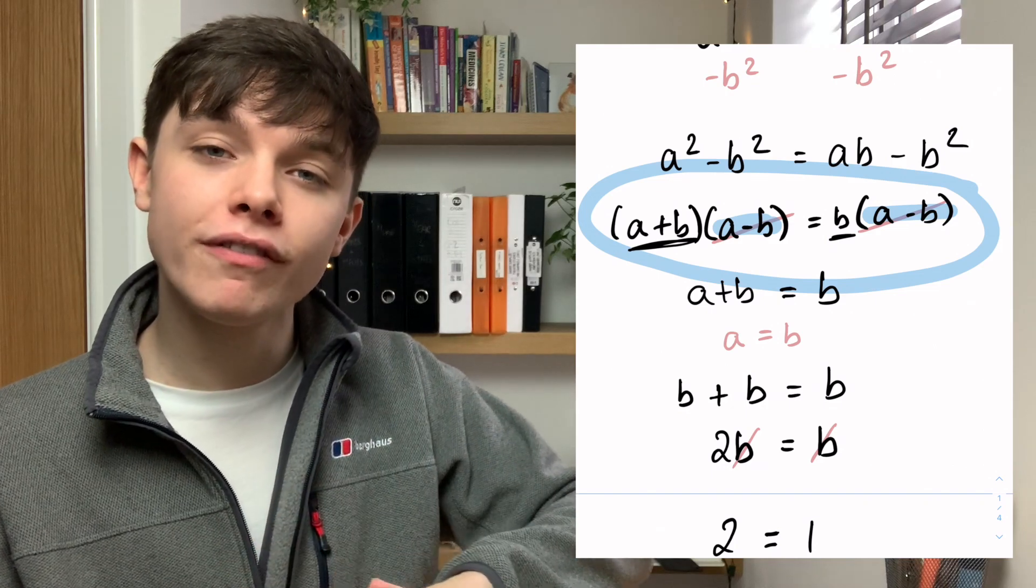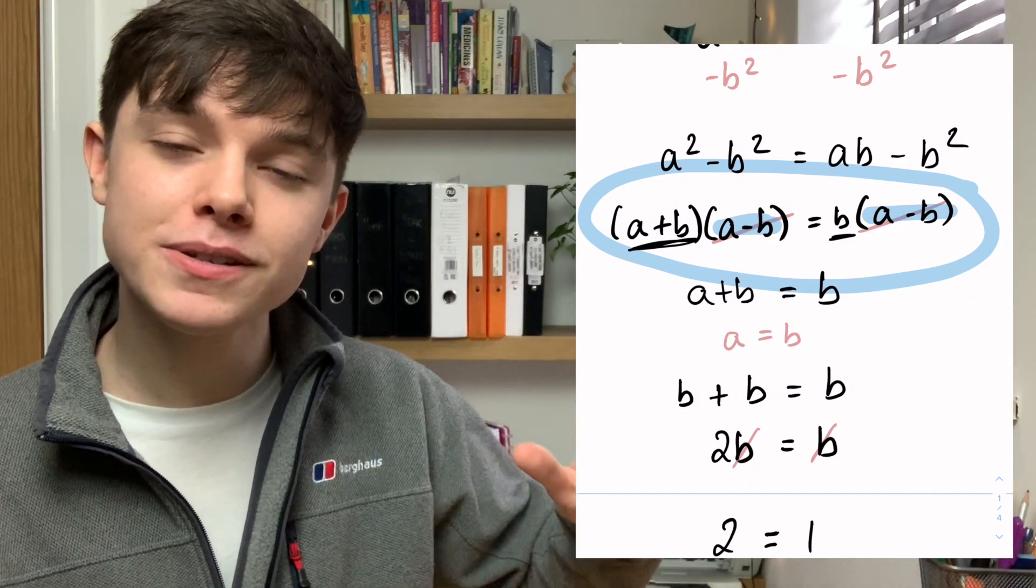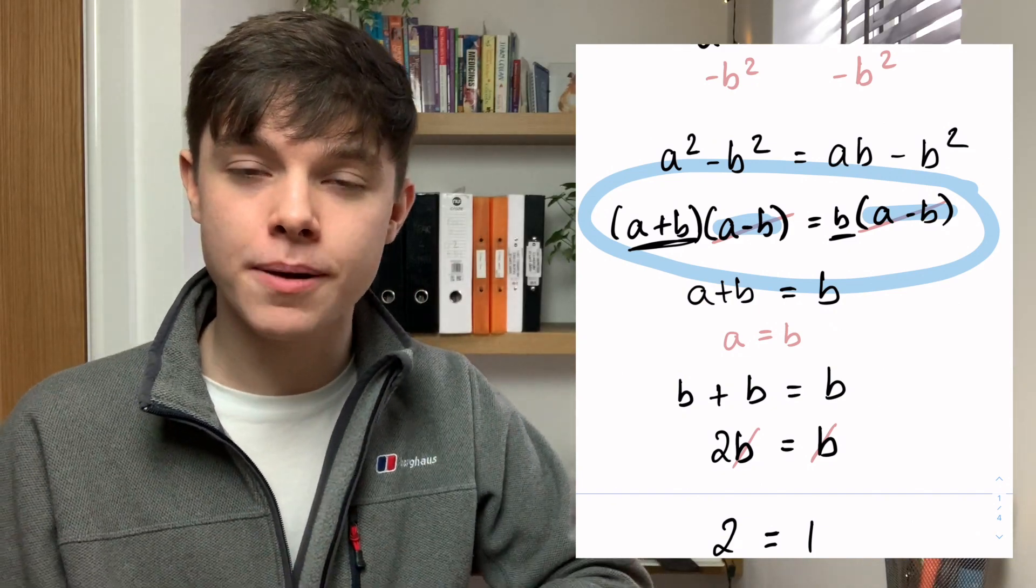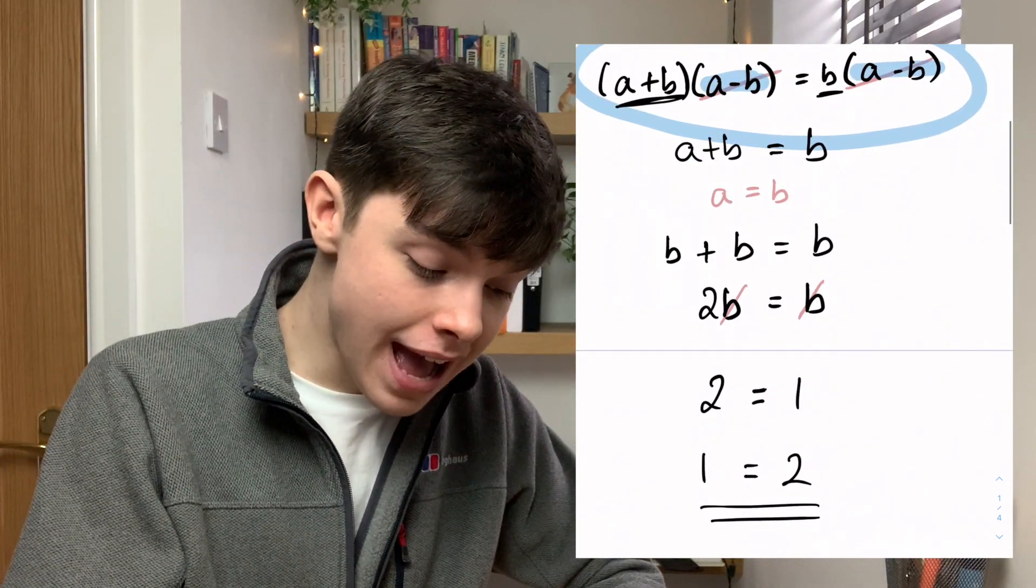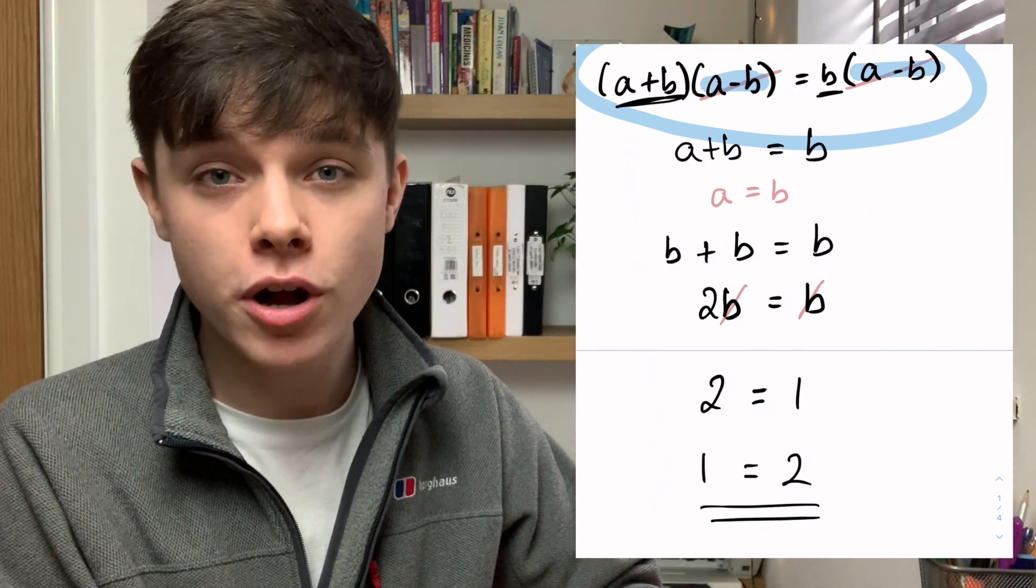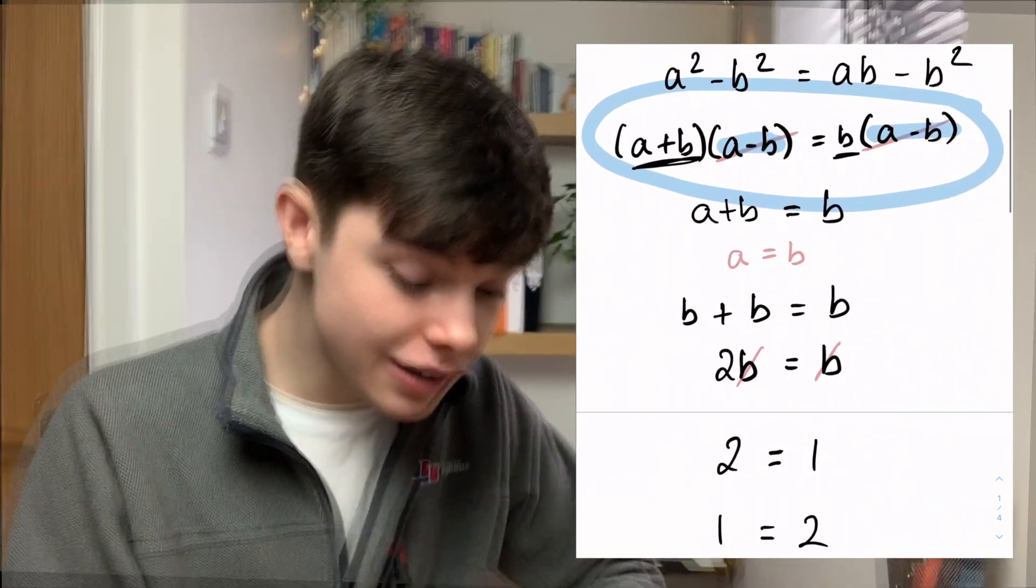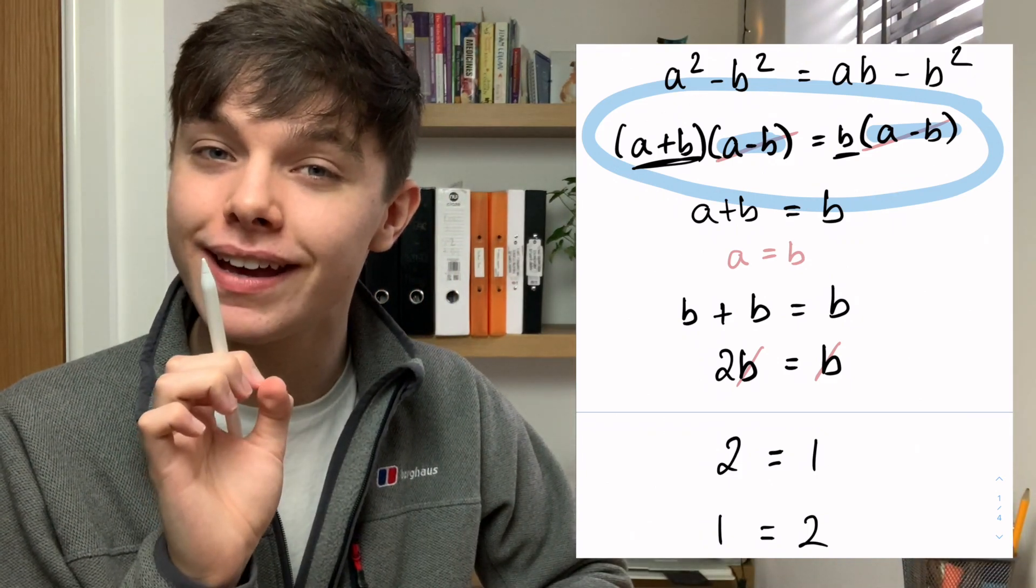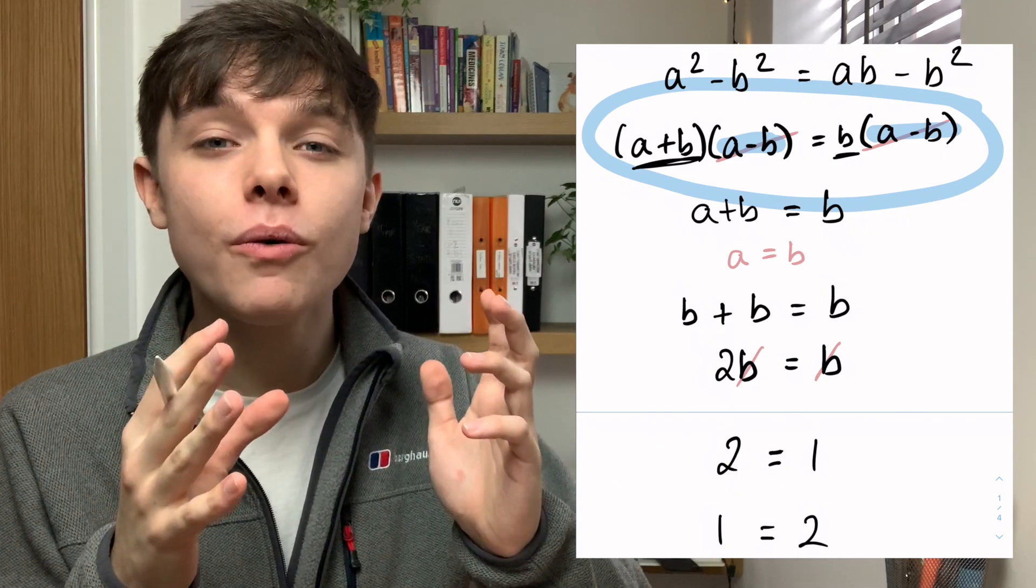What we just worked out when we put values in is that (a - b) is always 0 if a equals b. So everything after that, everything that follows this here, does not make any sense whatsoever because here we divided by (a - b) and (a - b) is 0. And as we know in maths we can't divide by 0.